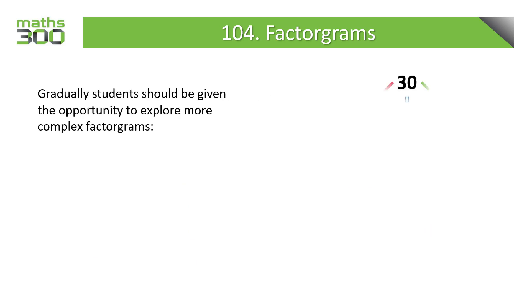Gradually students should be given the opportunity to explore more complex factorgrams. Here we see that 30 divides by 2 to produce 15, 30 divides by 5 to produce 6, and 30 divides by 3 to produce 10 and we can complete the factorgram as shown.